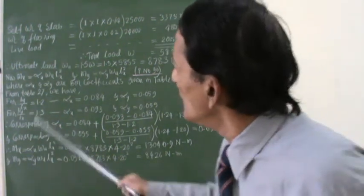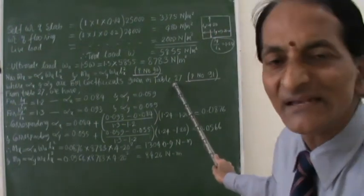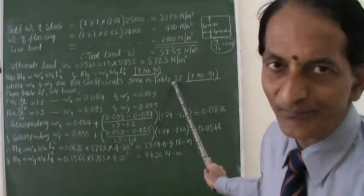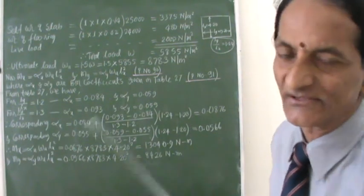So now, let us try to see how we calculate this alpha x and alpha y by using this table number 27. So I will stop here now. Tomorrow, I will show you that table. Thank you.